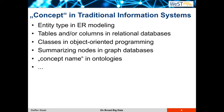Where do concepts occur in traditional information systems? In ER modeling, you would talk about entity types. In relational databases, you might talk about tables — sometimes a table would correspond to a concept, sometimes an individual column would correspond to the instantiation of a concept. Then you would have classes in object-oriented programming, which would correspond very well to concepts. In graph databases, you might have summarizing nodes that are instantiated by other nodes. And in ontologies, you refer to concept or concept name, if you are very precise.